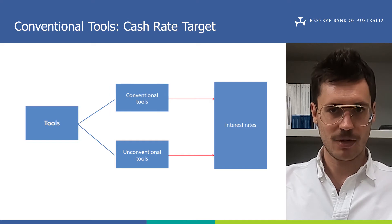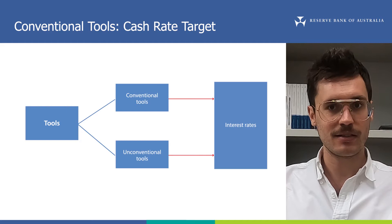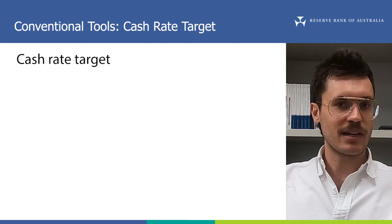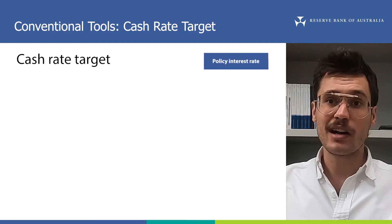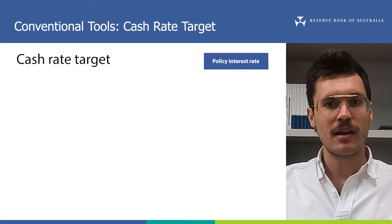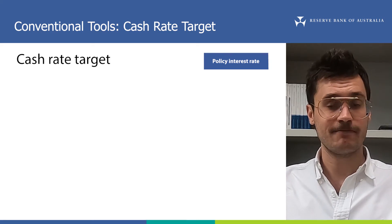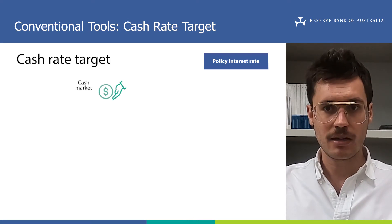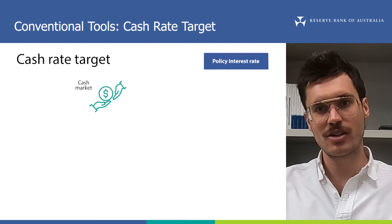This is called conventional monetary policy because it's the tool that the RBA has used most to influence interest rates for much of the past 30 years or so. In most countries, conventional monetary policy involves a target for a policy interest rate, and in Australia, this is the cash rate. The RBA announces its target for the cash rate following each board meeting. The cash rate is the interest rate for borrowing in the cash market, which is a market where commercial banks can borrow and lend cash to each other overnight.